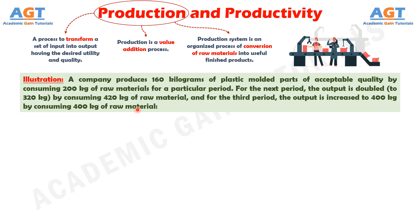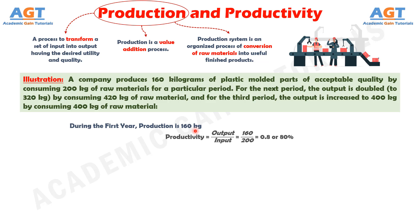During the first year, production is 160 kg. From the formula of productivity — productivity equals output divided by input — the output is 160 kg and the input is 200 kg. Dividing 160 kg by 200 kg, the productivity for the first year is 0.8, or 80%.